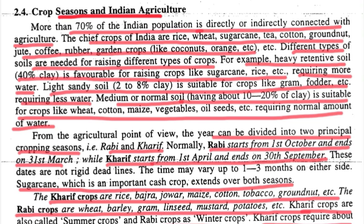About 70% of the Indian population depends on agriculture. Important crops include rice, wheat, sugar, candy, cotton, groundnut, jute, coffee, rubber, and garden crops like coconut and orange. These are the most important crops, and different types of crops require different types of soils.